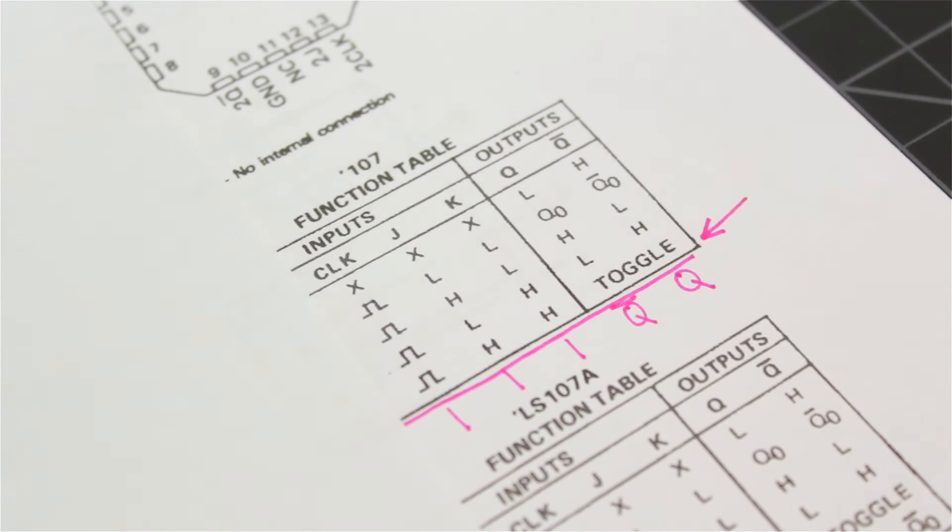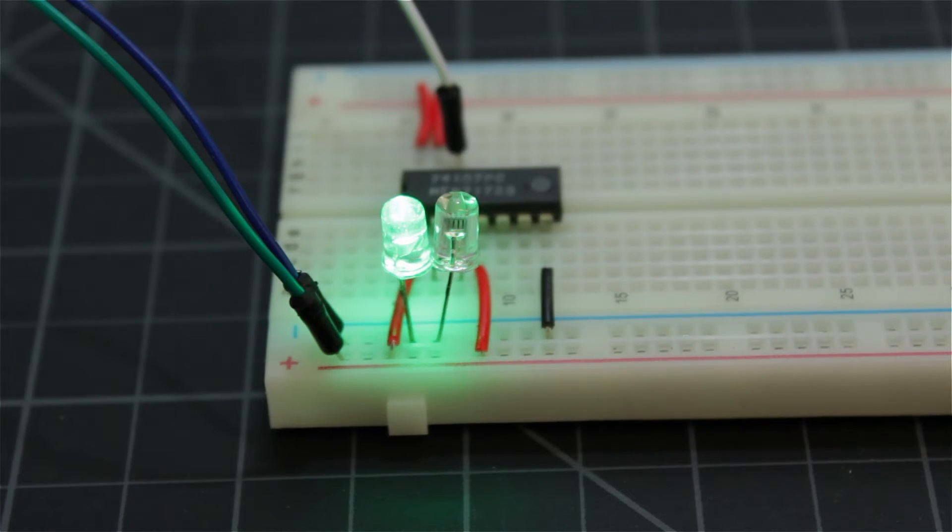We can test this by building the circuit. When we tie J and K high, we can see the LEDs toggle every single clock pulse.